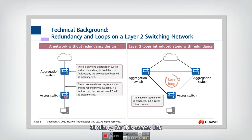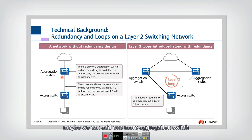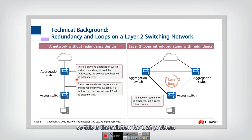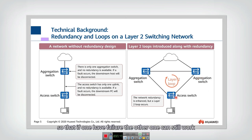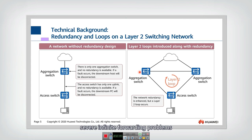Similarly, the access link also has this problem — if a link fails, the downstream devices are all disconnected. To solve these problems, people think to add redundancy into the network, such as adding one more aggregation switch and one more aggregation link, so that if one fails, the other can still work. However, this creates a loop in the network, and such a Layer 2 loop will cause severe infinite forwarding problems.